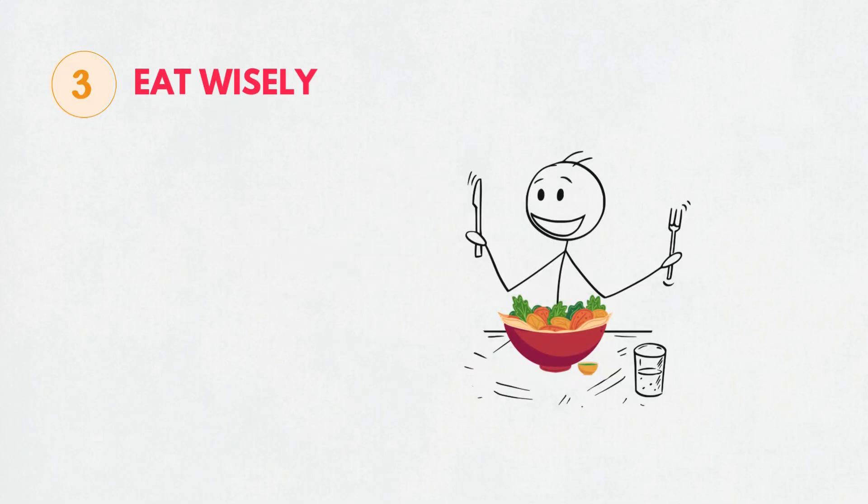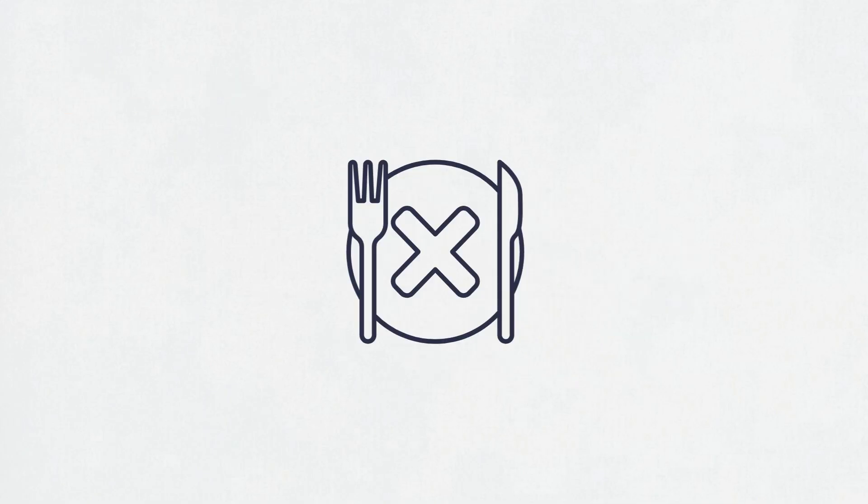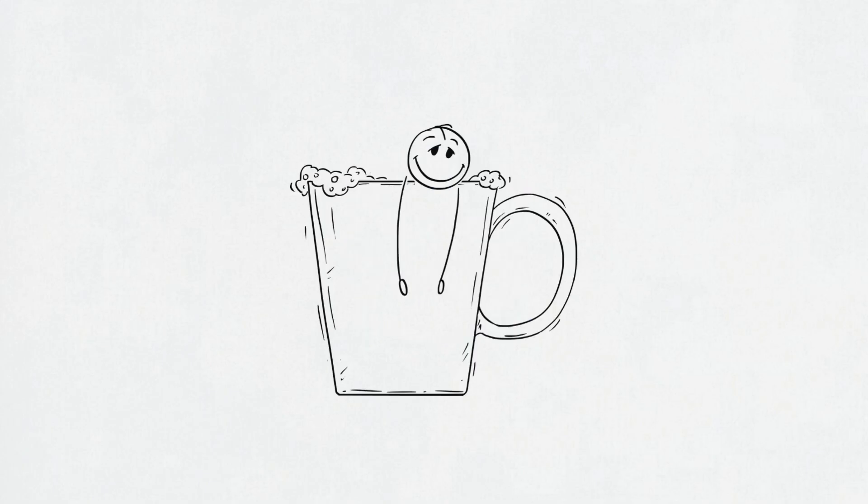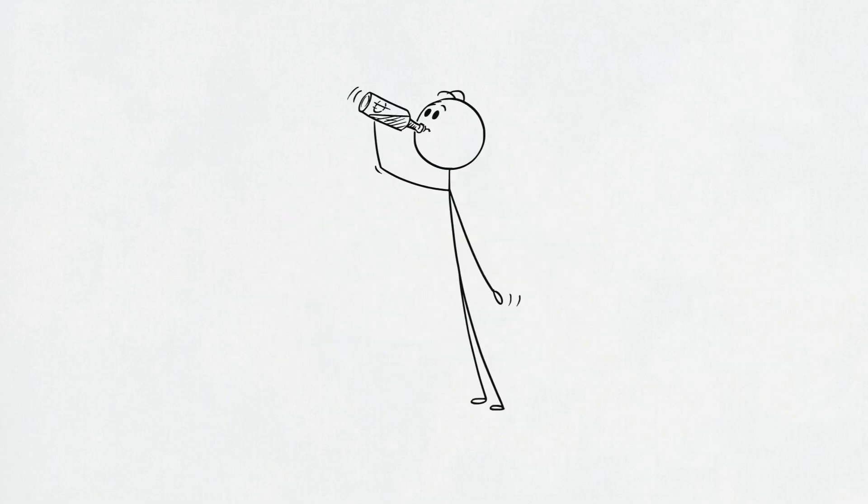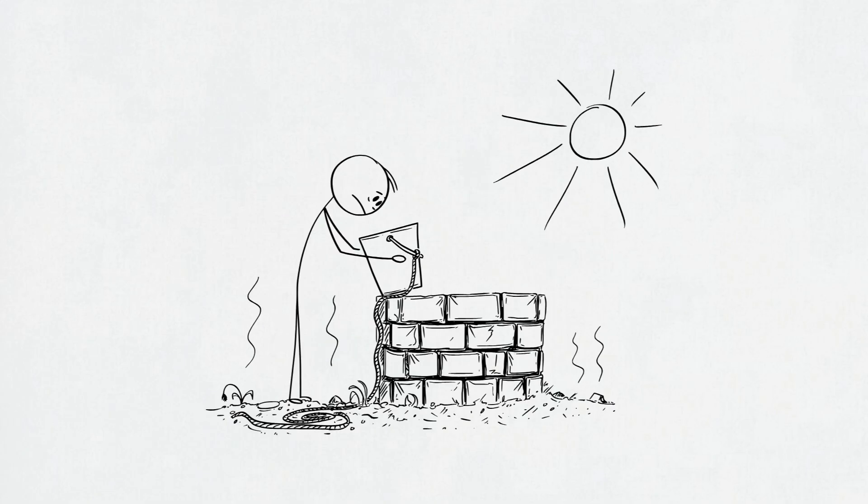Third, eat like a human, not a YouTuber on a deadline. Skipping meals and living on iced coffee guarantees mashed potato brain. Fix it by eating protein, drinking water, and staying hydrated. Even being 1% dehydrated messes with thinking.